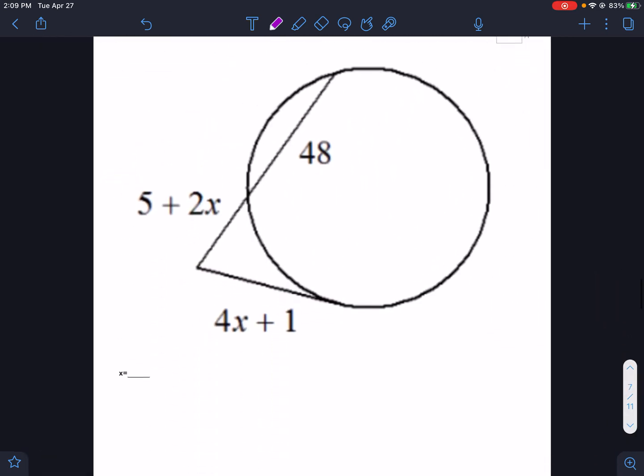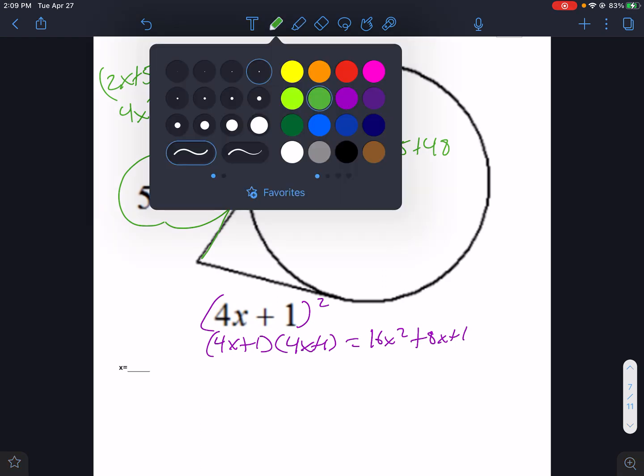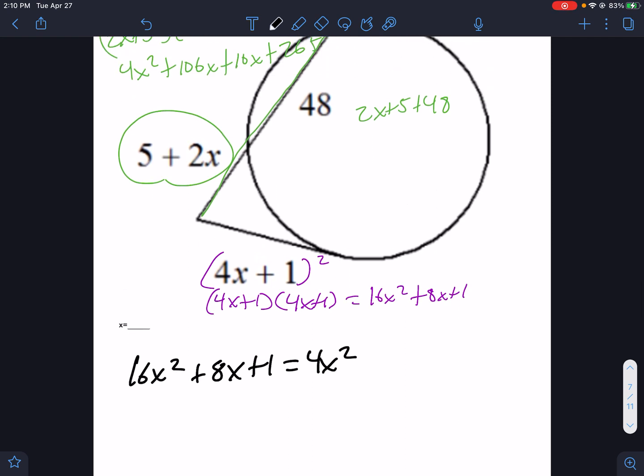All right. This was a pretty tough one. We did this in class. I'm going to start with the 4x plus 1 squared, which is 4x plus 1 times 4x plus 1, which is 16x squared plus 8x plus 1. Then we have over here our outside. I'm going to rewrite it as 2x plus 5 times the total, which is 2x plus 5 plus 48, which is 2x plus 53. And that's going to get us 4x squared. And that's going to get us 4x squared plus 106x plus 10x plus 265.